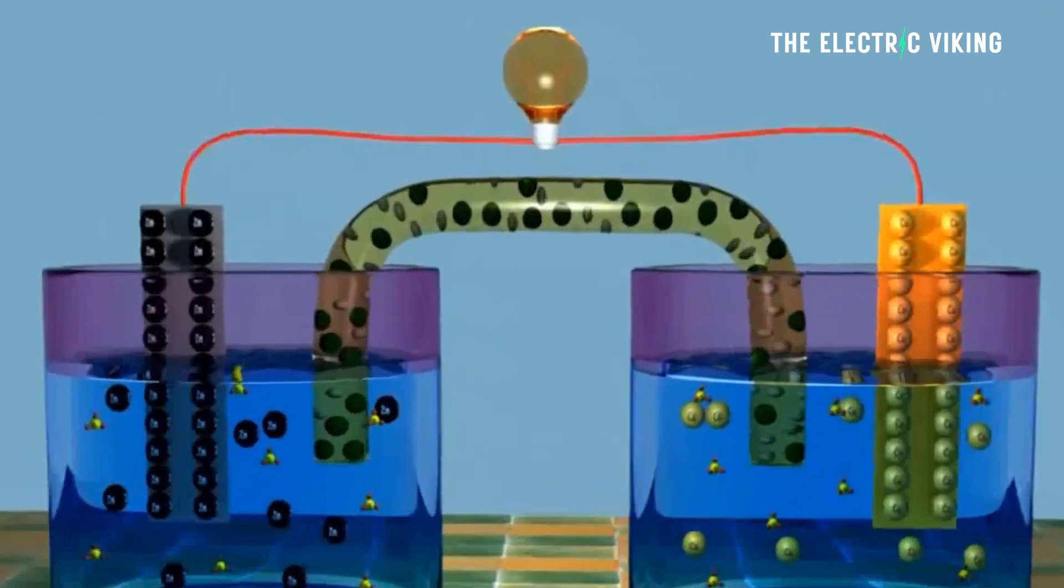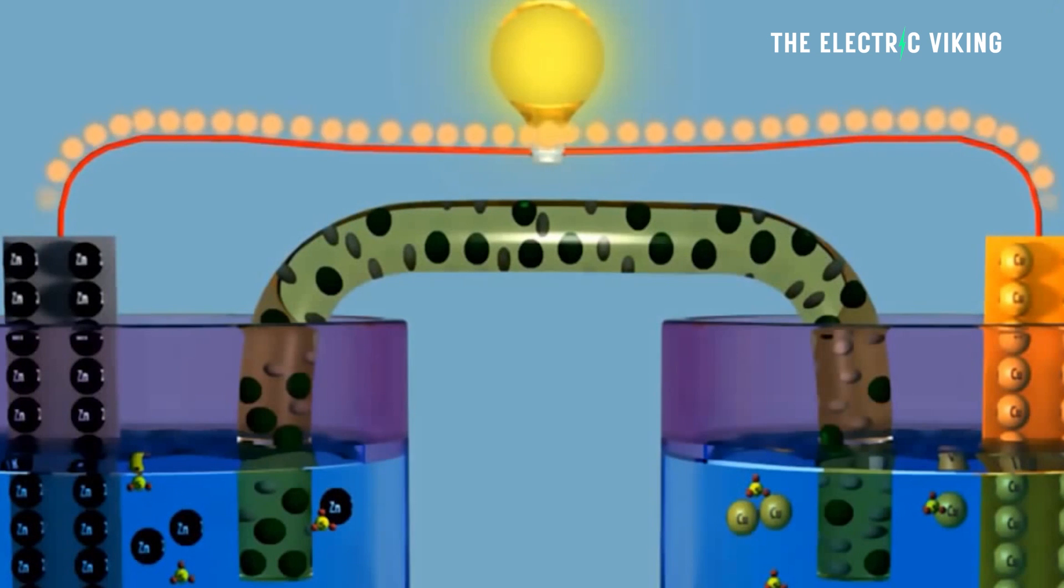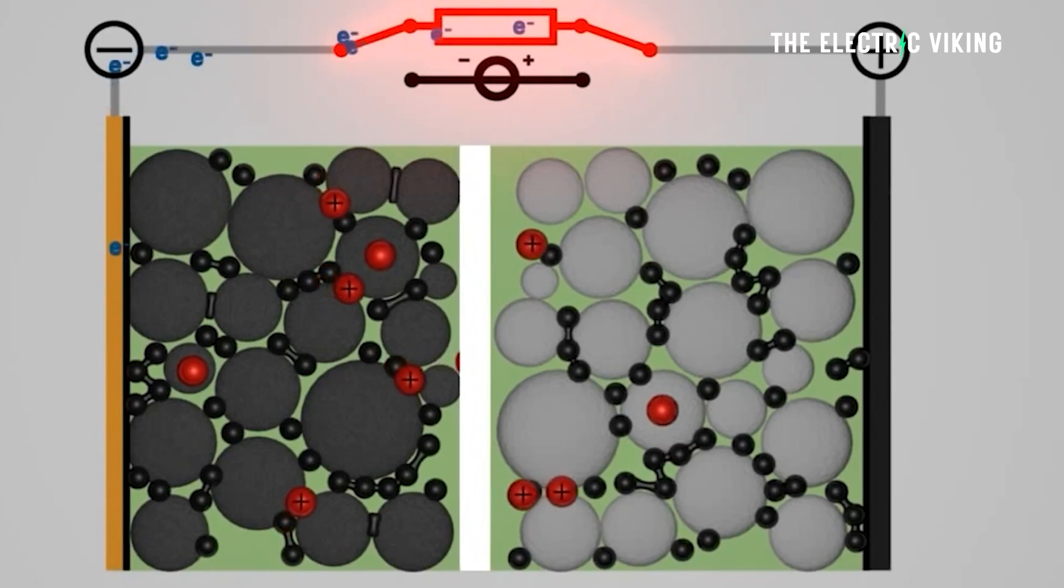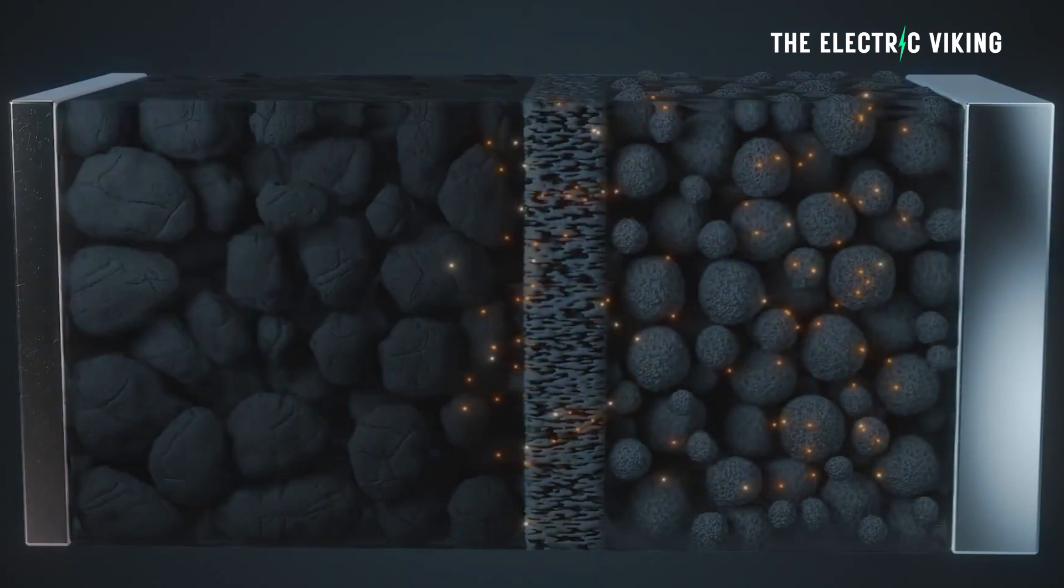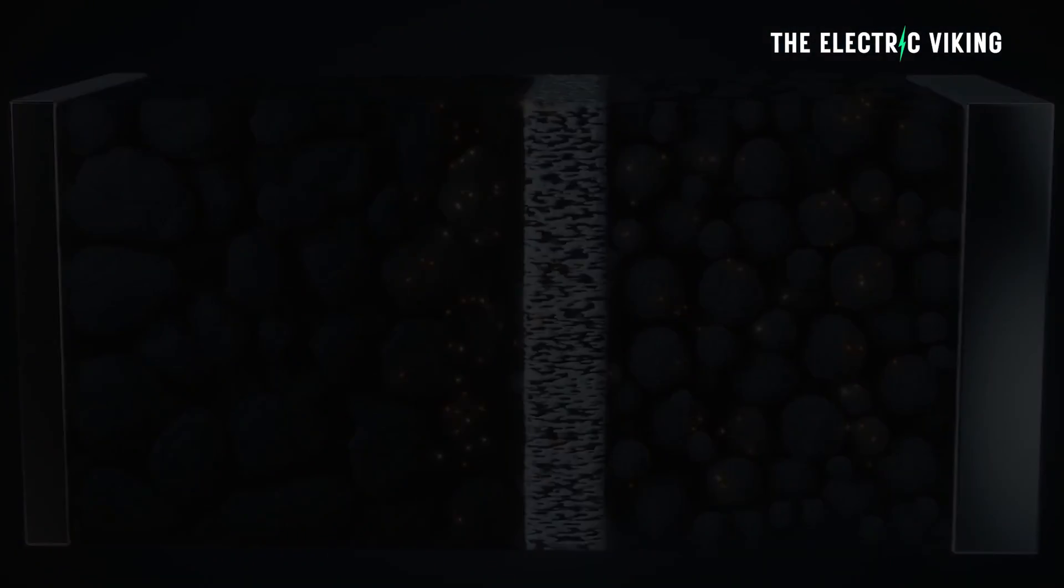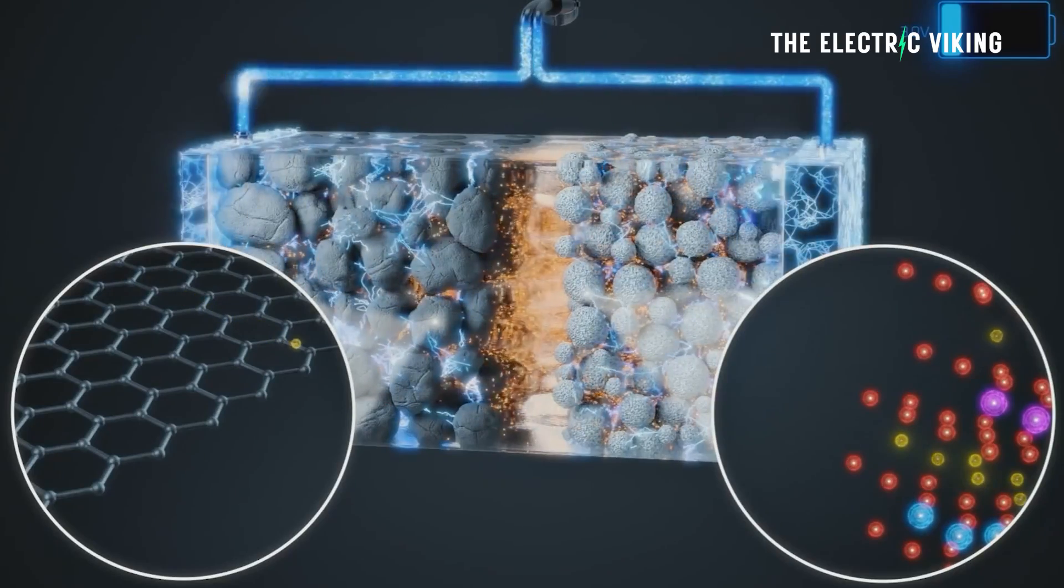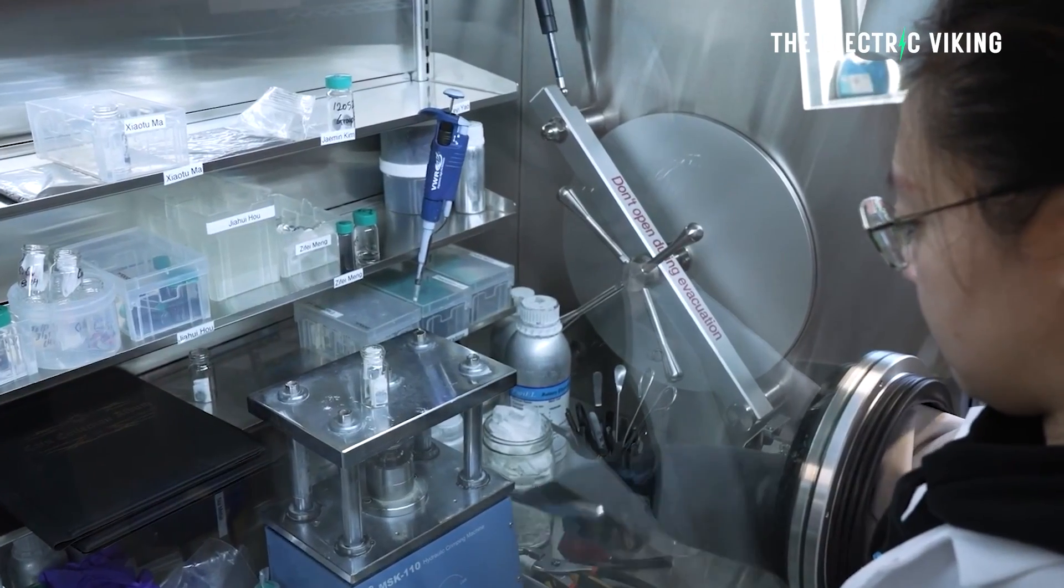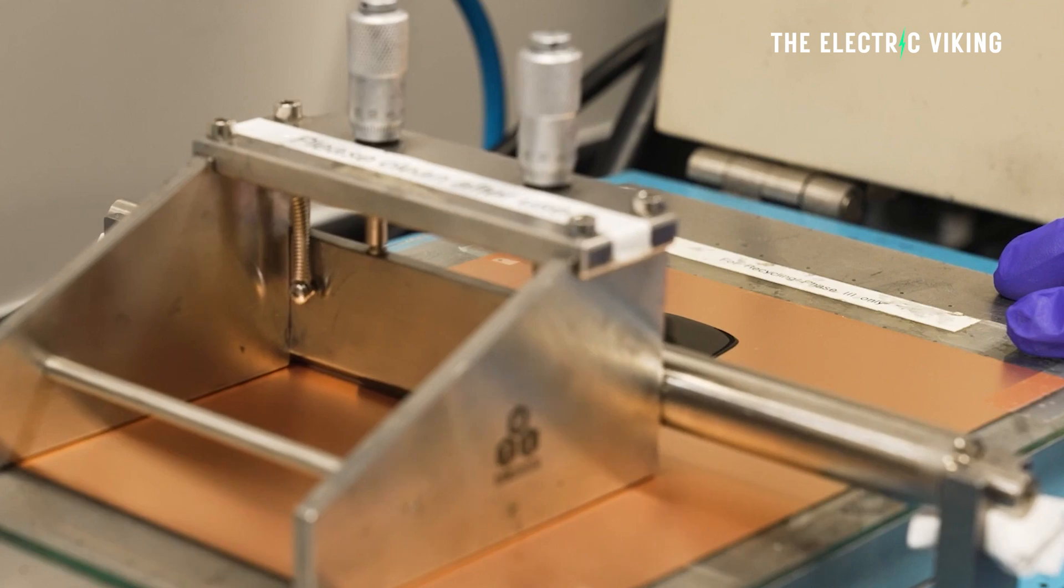Iron phosphates are the cheapest form of cathodes that are currently mass-produced. These materials can reversibly intercalate and de-intercalate lithium ions during charge and discharge cycles. The choice of cathode materials depends on factors such as energy density,